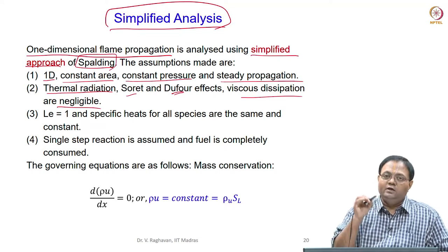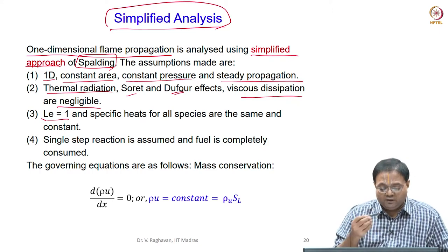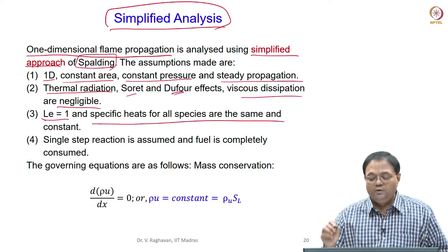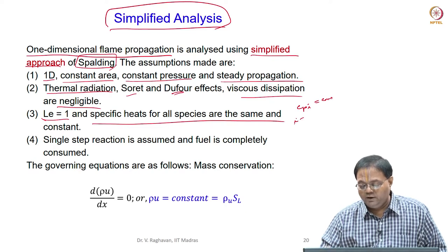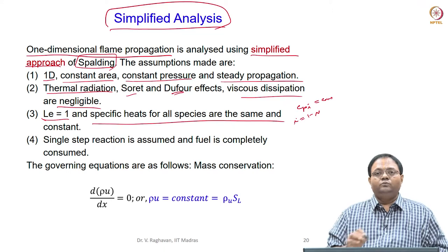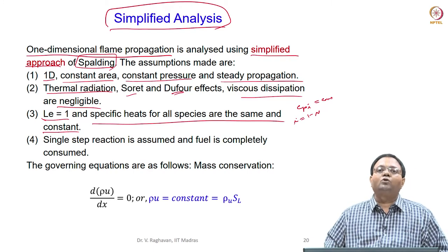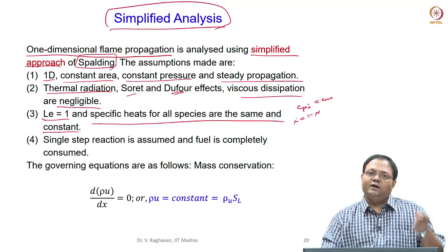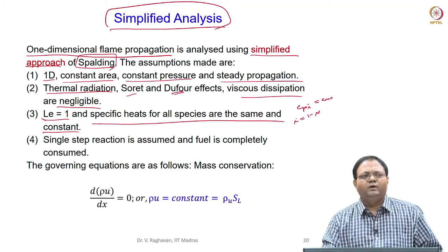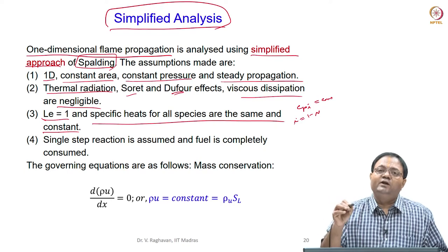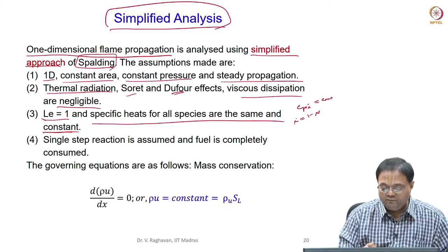Viscous dissipation and work done due to high-speed flows are also not taken into account as they are negligible. Lewis number is assumed to be 1, which is not always true. Similarly, the specific heat of all species is assumed to be the same and constant — CpI is constant for i from 1 to N. There is no variation in Cp with temperature; we take an average temperature and calculate values.